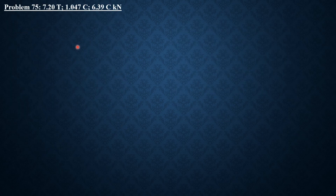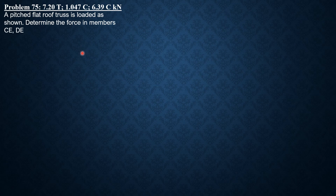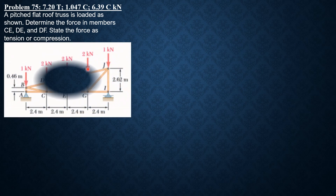For problem 75, a pitched flat roof is loaded as shown. Determine the forces in members CE, DE, and DF, stating tension or compression. The loadings are symmetrically located, so the total load is 1+2+2+2+1 = 8 kN, giving vertical reactions of 4 kilonewtons at A and at I. The horizontal reaction at A is zero.